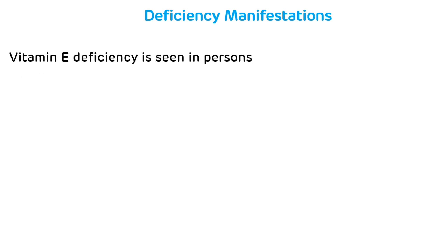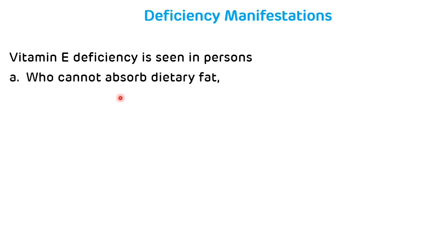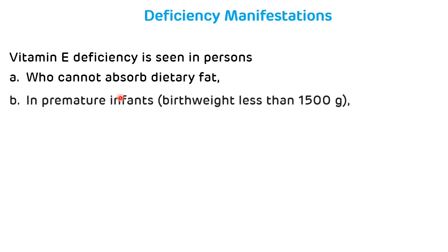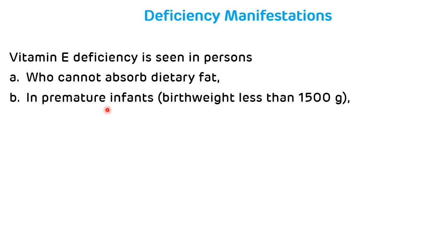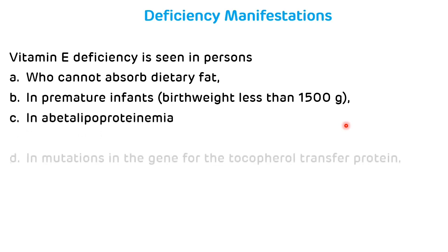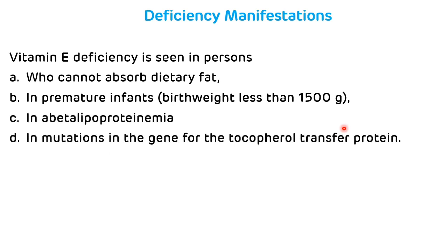Vitamin E deficiency can occur in persons who cannot absorb dietary fat, in premature infants with birth weight less than 1.5 kg, in abetalipoproteinemia, and in mutations in the gene for the tocopherol transfer protein.